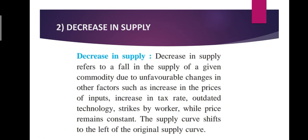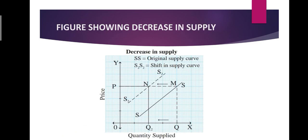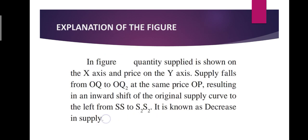The second is decrease in supply — it refers to a fall in the supply of a commodity due to unfavorable changes in other factors. Unfavorable changes can include increase in the prices of inputs, increase in the tax rate, outdated technology, strike by workers, etc. Price remains constant here, and the supply curve shifts to a new supply curve to the left-hand side. SS is the original supply curve and S2S2 is the new supply curve moving towards the left-hand side, denoting decrease in supply. So students, go through the lecture well and prepare the answer. Try to plot the diagram yourself. Thank you.